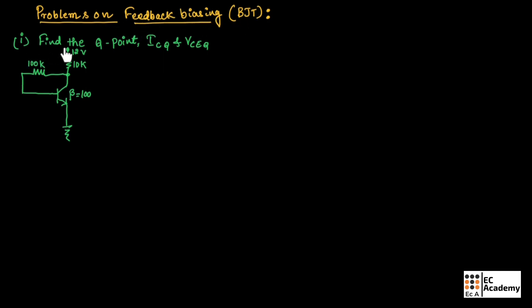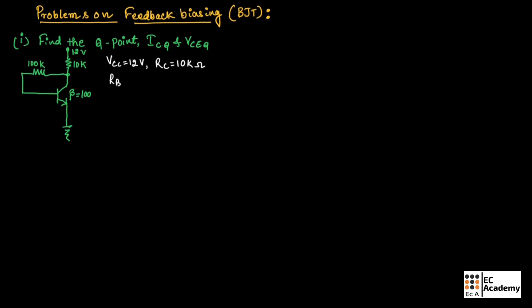In the first problem, we need to find the Q point IC and VCE. They have given the circuit where VCC is 12 volts, RC is 10 kilo ohm, RB is 100 kilo ohm, and beta is given as 100. First, we need to write the given data.